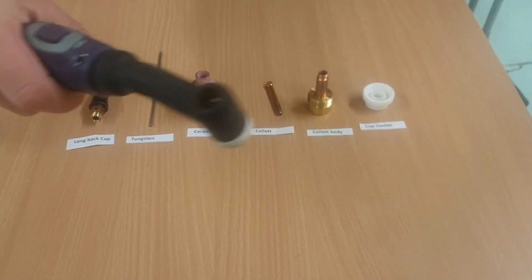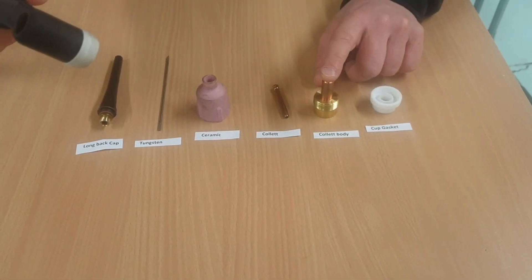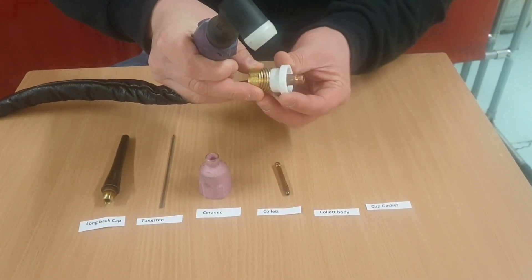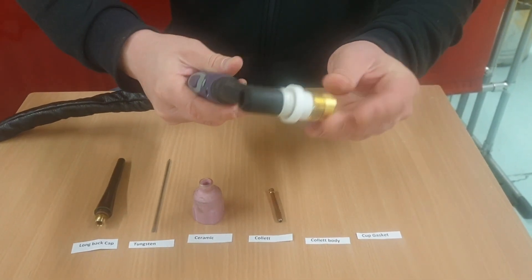In this video we're going to show you how to put together a basic TIG welding torch. You can see six things on the screen: the cup gasket, the collet body, the collet, the ceramic, the tungsten, and the long back cap.